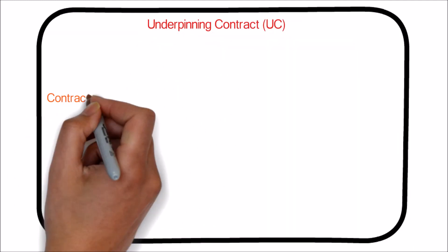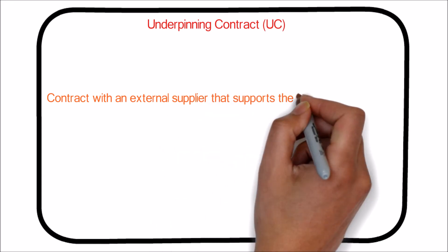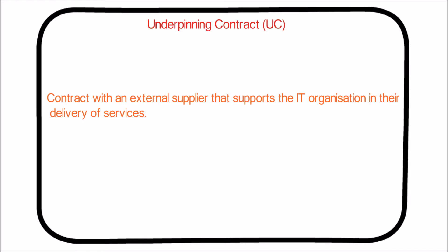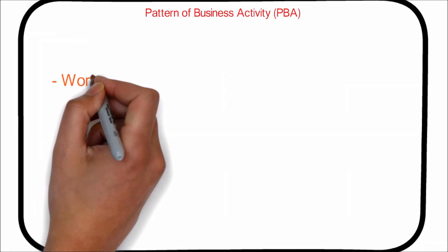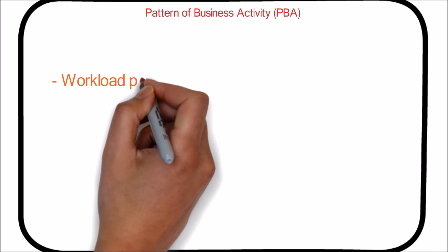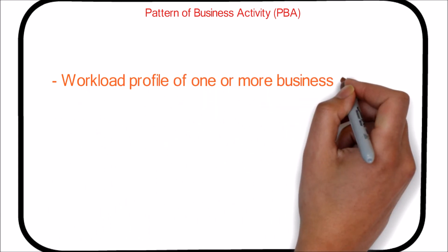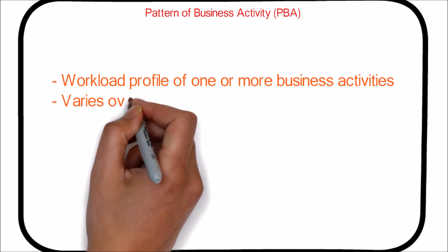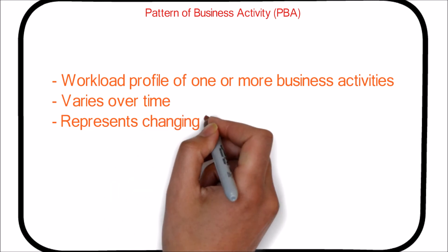An Underpinning Contract is a contract with an external supplier who supports the IT organization in their delivery of services. Pattern of Business Activity — PBAs are workload profiles describing the demand for particular services. PBAs are an important tool used by demand management for anticipating and influencing service demand.